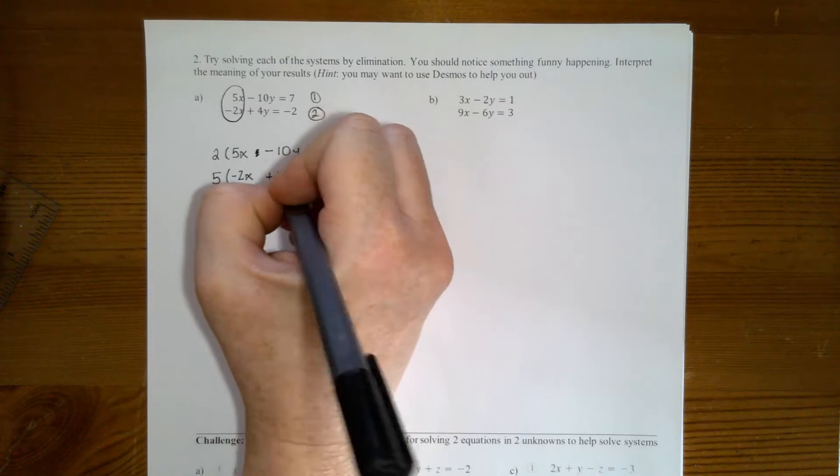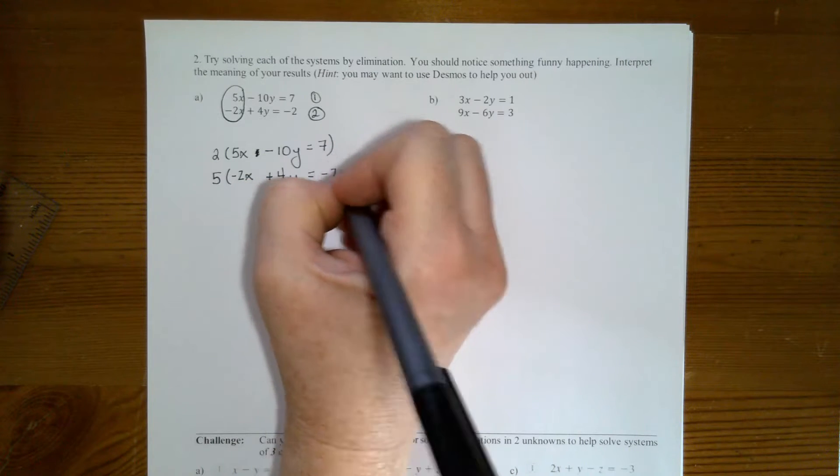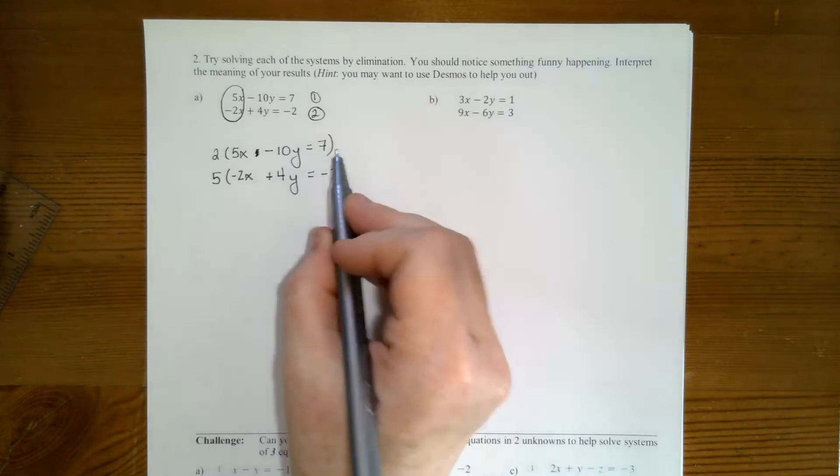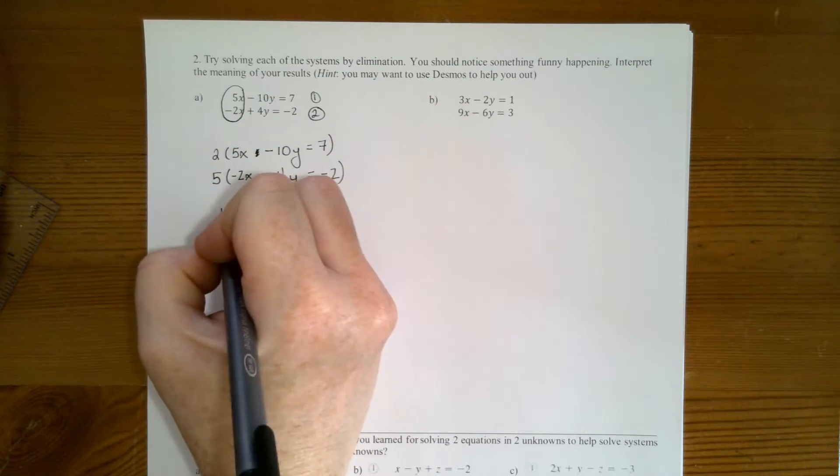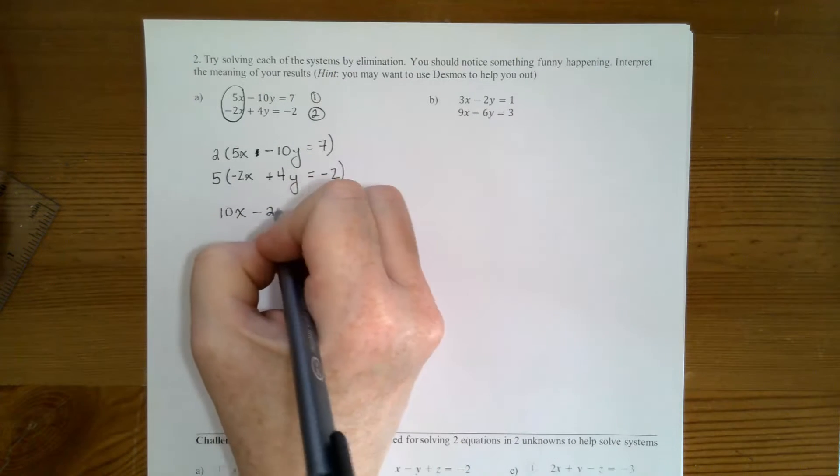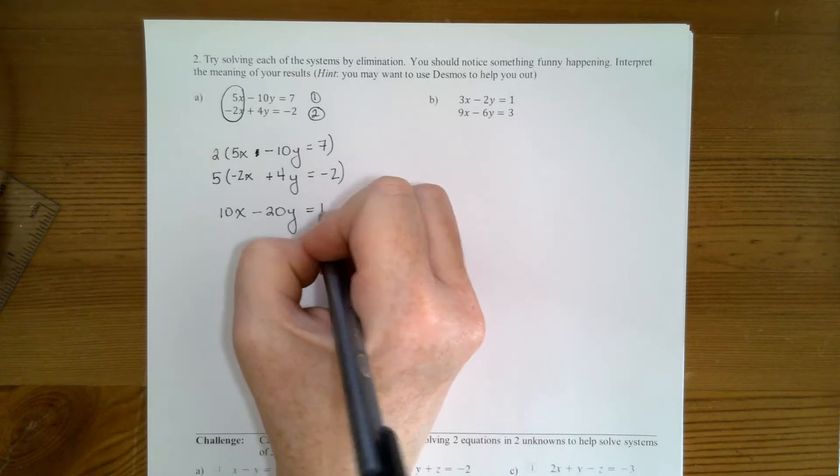But remember, when you multiply, you can't change things in math. So we can keep this equality by multiplying all the terms by 2. So 2 times 5x is 10x. 2 times negative 10 is negative 20. And 2 times 7 is 14.